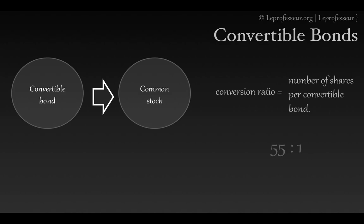The conversion ratio tells you how many shares you can get out of one convertible bond. For example, if the conversion ratio is 55, it means you can receive 55 shares out of one convertible bond.